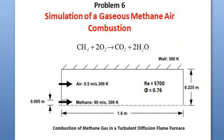Hi, welcome to ANSYS Fluent tutorial. Today we will see the simulation of a gaseous methane air combustion. Here you can see we have the problem statement. We will do methane combustion and here is the equation for methane reacting with air. Methane will react with oxygen and it will produce carbon dioxide and water.